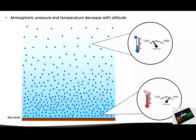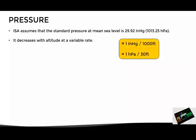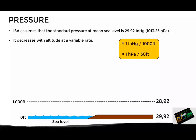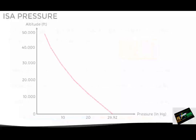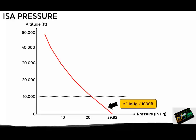Let's now see how the pressure behaves in the ISA atmosphere. It is assumed that the pressure at sea level is 29.92 inches of mercury or 1013 hectopascals, depending on the unit of measurement used. This pressure decreases with altitude at a variable rate. However, we can say that the pressure reduction with altitude in the first levels corresponds to approximately 1 inch of mercury per 1000 feet, or 1 hectopascal per 30 feet. This means that under standard conditions, at sea level we would have an atmospheric pressure of 29.92 inches of mercury, at 1000 feet approximately 28.92, at 2000 feet 27.92, and so on. This results in a graph where the line is not completely straight, since the rate of change of pressure with altitude is variable. However, up to about 10,000 feet we can experience a reduction of 1 inch of mercury per 1000 feet.